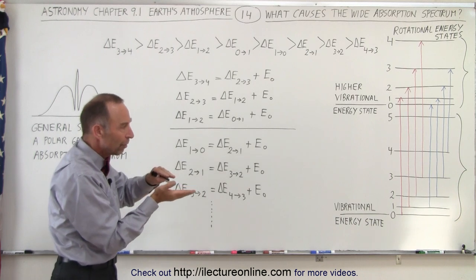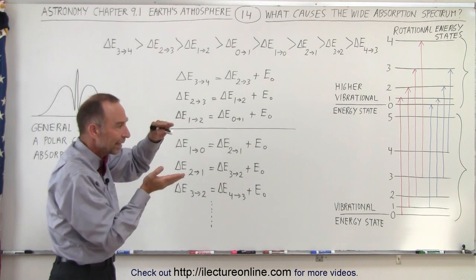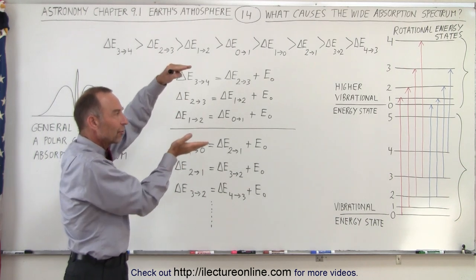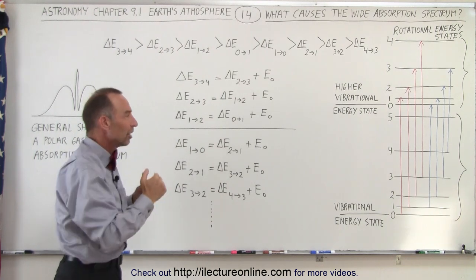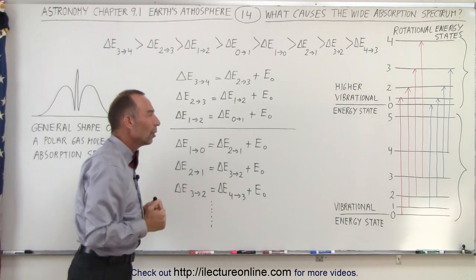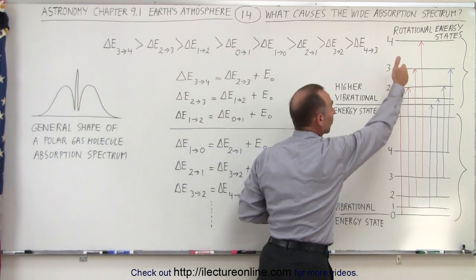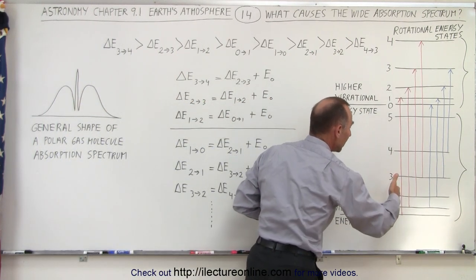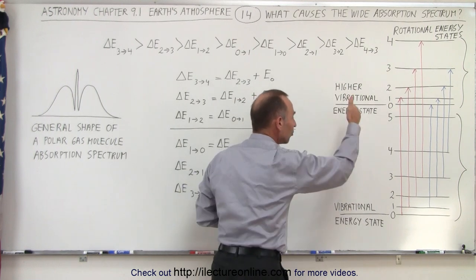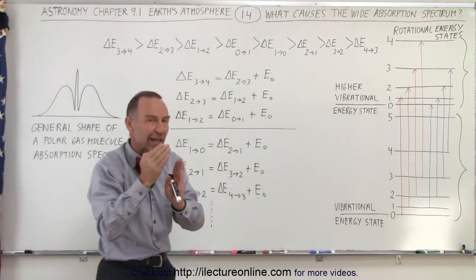Each time we jump from one level to another and keep looking at the various energy jumps, the difference always increases by a fixed amount. If we add the energy difference in the jumps on the rotational state in combination with the energy difference in the vibrational state, there are many different combinations.